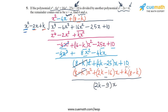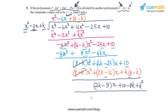The constant term is 10 minus k(8 minus k), which gives 10 minus 8k plus k squared. This is now a linear polynomial with degree lower than the divisor, so the division process terminates. The remainder is (2k minus 9)x plus (10 minus 8k plus k squared). This should match the remainder given in the problem: x plus a.